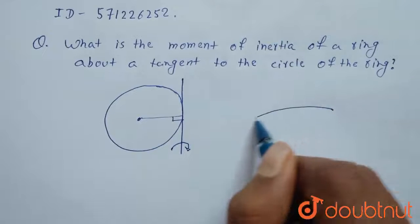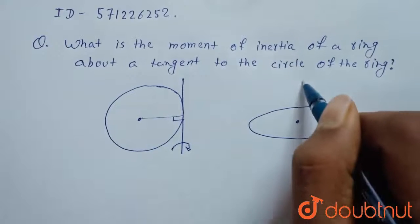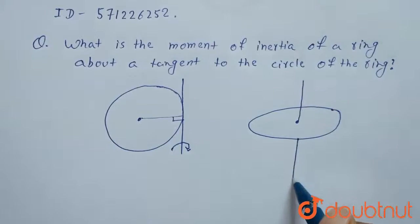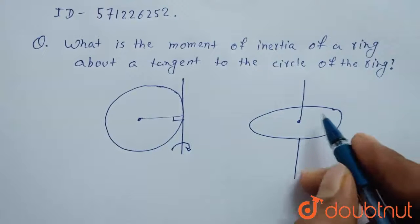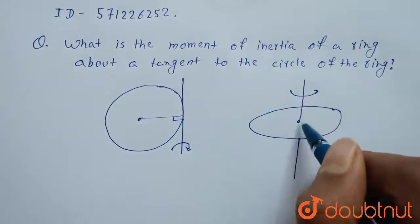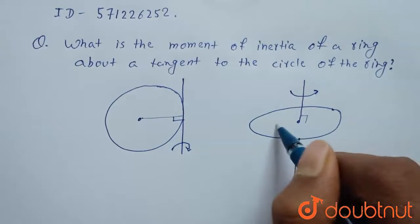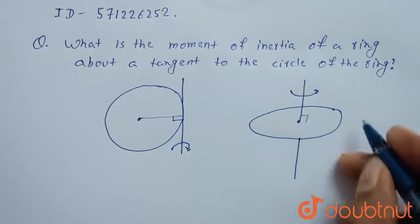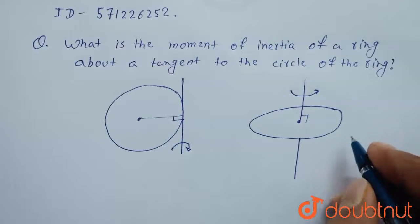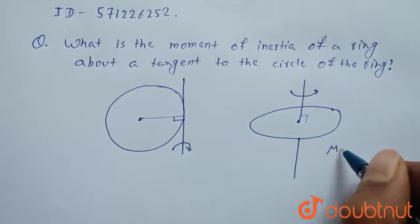The moment of inertia of a ring about its center — that is, the perpendicular axis from the center — is known to us. This axis is passing through its center and is perpendicular to its plane. About this axis, it is MR².